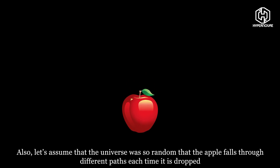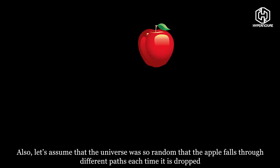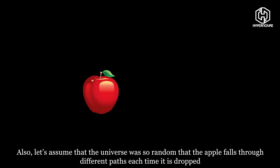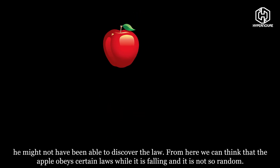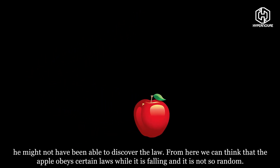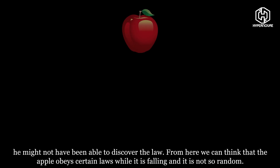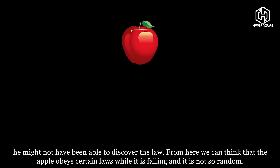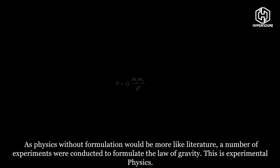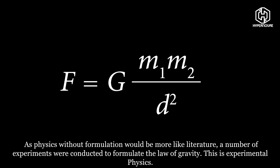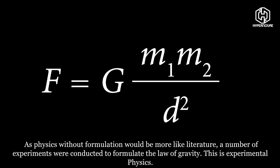Also, let's assume that the universe was so random that the apple falls through different paths each time it is dropped. He might not have been able to discover the law. From here, we can think that the apple obeys certain laws while it is falling, and it is not so random. As physics without formulation would be more like literature, a number of experiments were conducted to formulate the law of gravity. This is experimental physics.